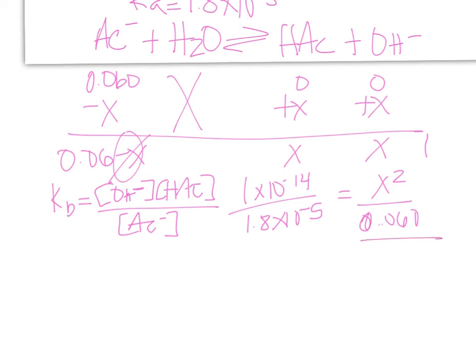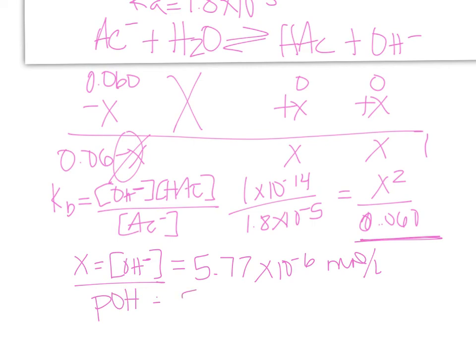I may get a number a little bit differently than you do, mainly because when I did this, I kept that crazy number of sig figs. So my X, which is equal to my OH minus concentration—remember, you have to say what X equals to earn that potential point on the AP—I get 5.77 times 10 to the negative 6 moles per liter. When I take the negative log, I get pOH of 5.24, and subtract that from 14 to get pH of 8.76.